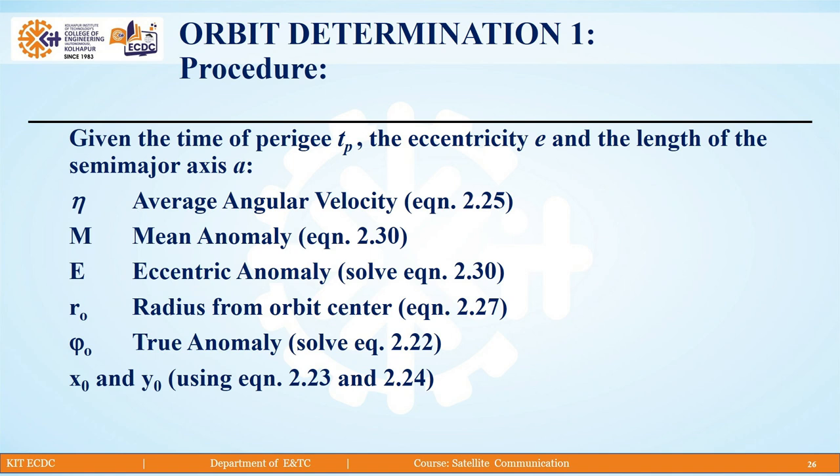Given the time of perigee tp, eccentricity e, and the length of semi-major axis a, we need to find out: average angular velocity η, mean anomaly M, eccentric anomaly E, radius from orbit centre r₀, true anomaly φ₀, and coordinates x₀ and y₀. We have different equations to find out all these important parameters.